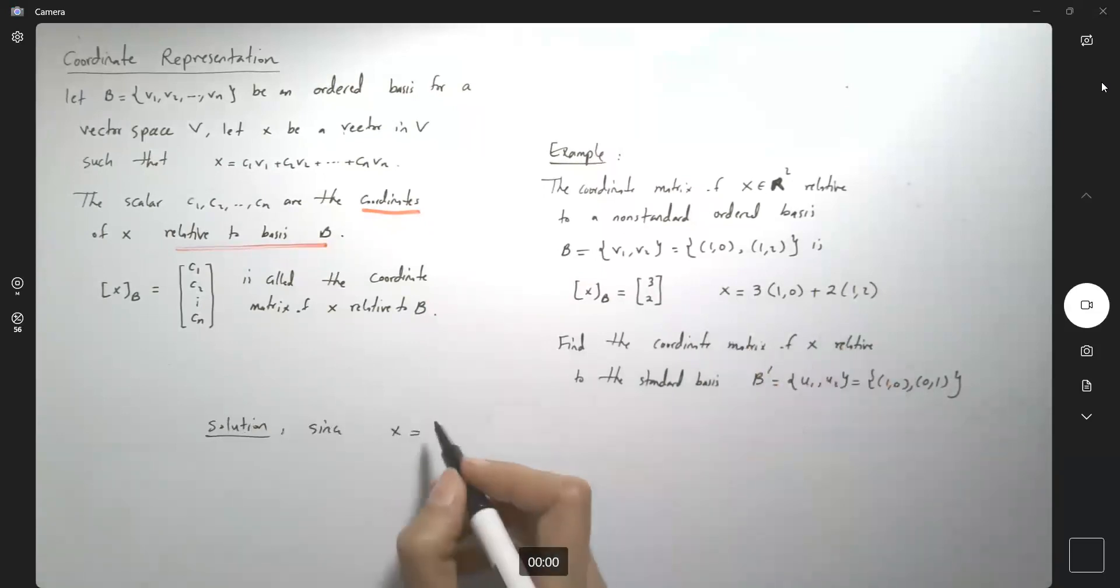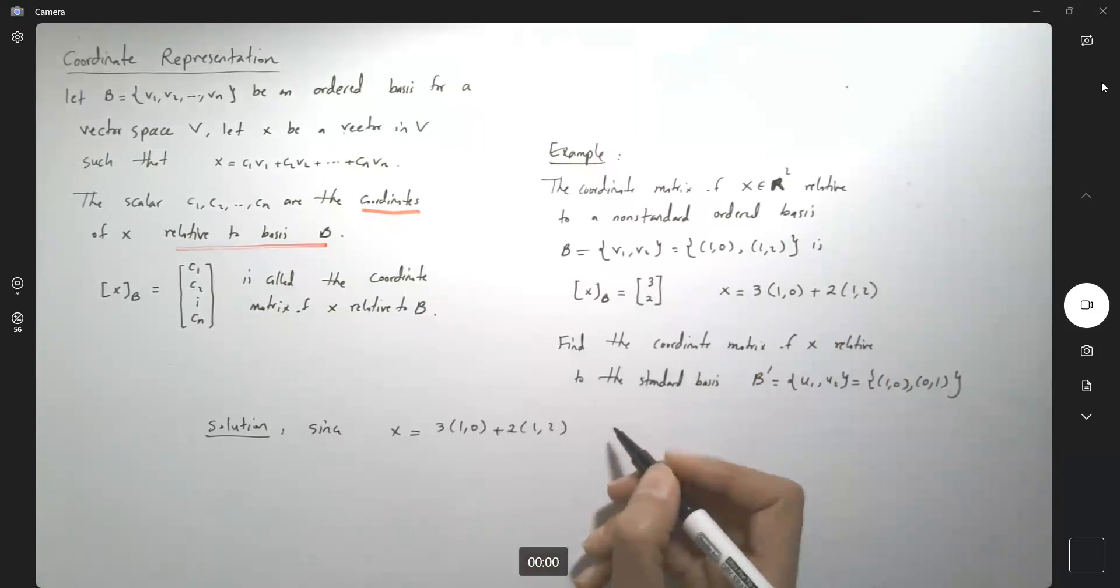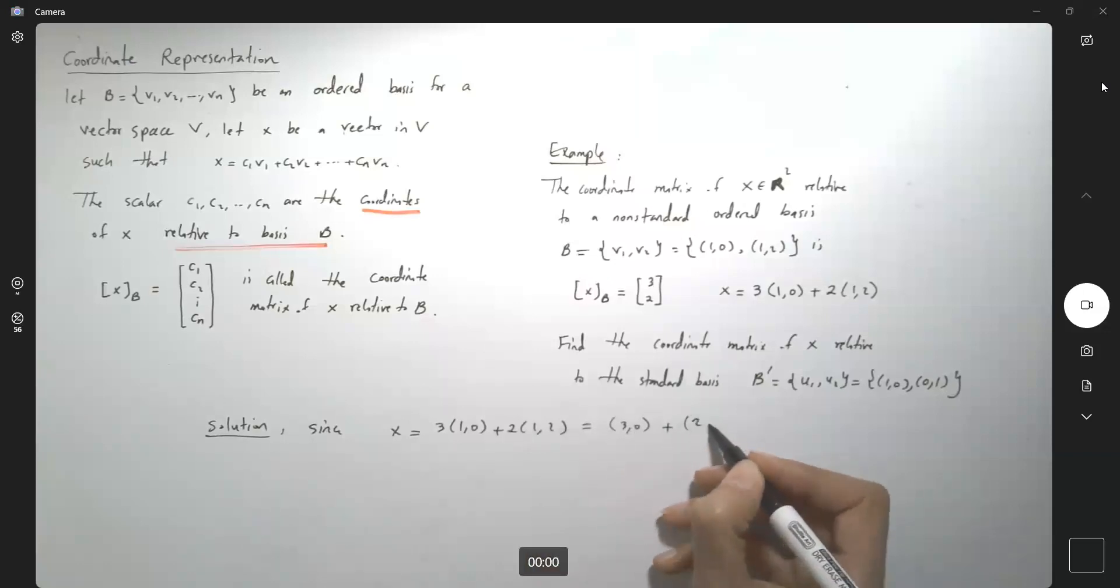Since x is written as 3 times (1,0) plus 2 times (1,2), this is basically saying that it's equal to the first vector (3,0) plus the second vector (2,4), which gives you vector (5,4). This is our vector in the plane.